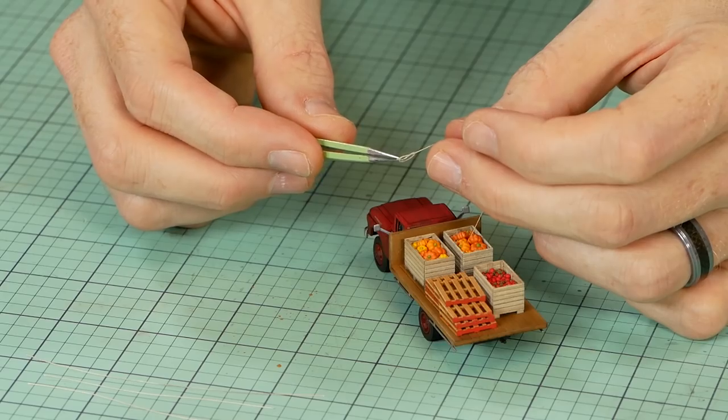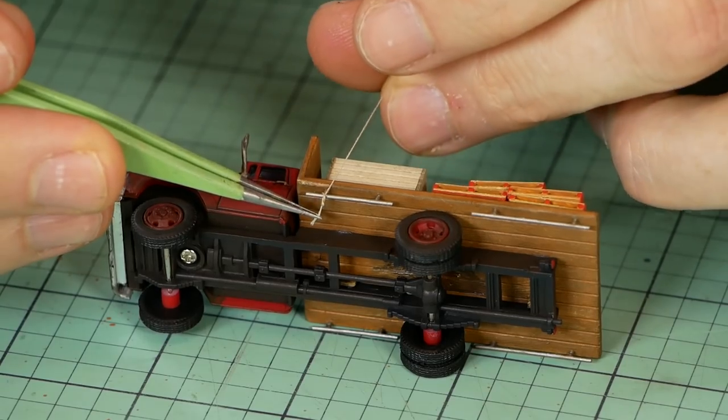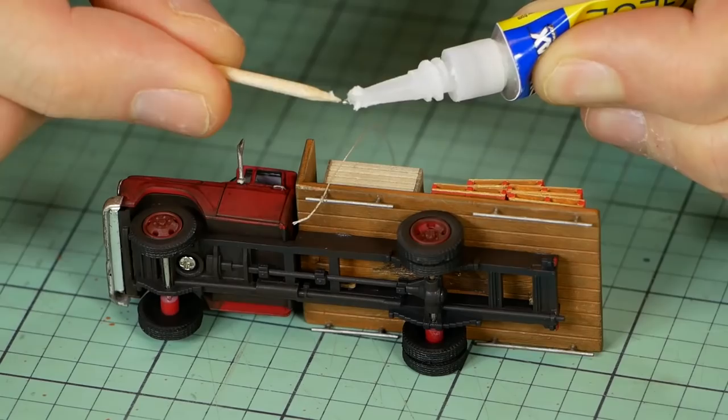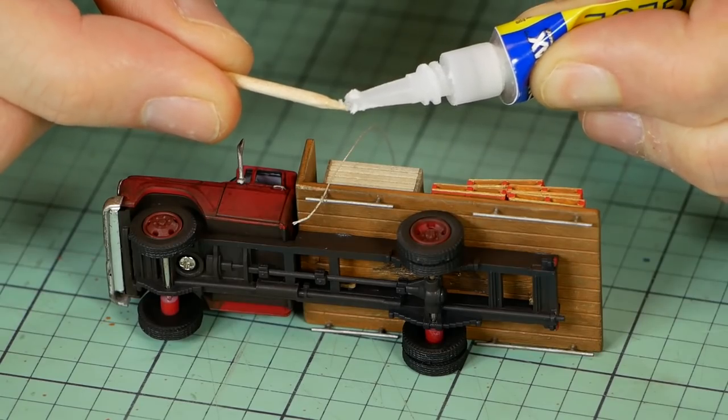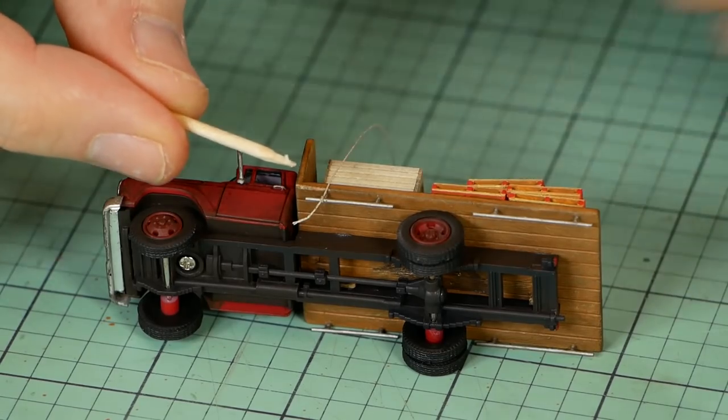This is one of the more difficult parts of the build. Just take your time and you can use super glue to help hold the thread to the tie-down rail as you make it look like the rope has been tied on.